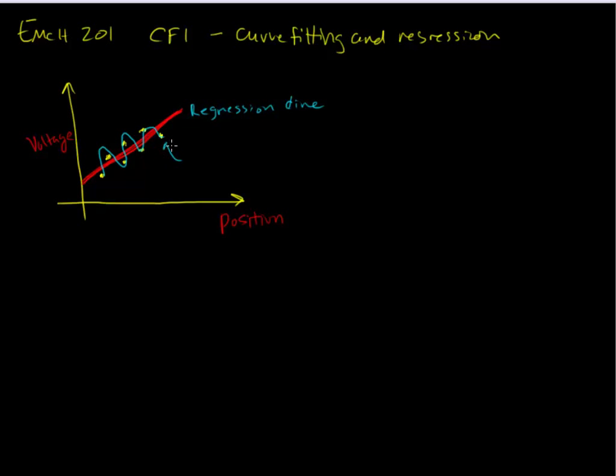If we had precise data, for example, we knew that these values were exactly where they needed to be and they actually were a real model, then this would be a polynomial fit and maybe that would be appropriate for the data. But for today we're going to talk about a regression line and when that's appropriate.